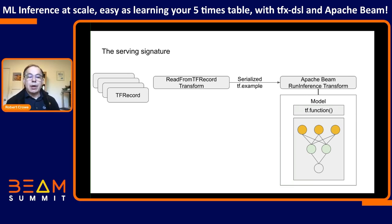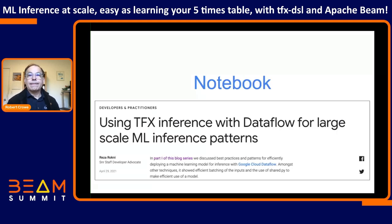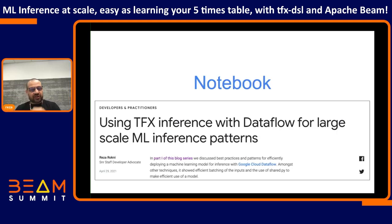A serving signature is very much like a method signature — it tells you what the model expects and how you can query the model. You can actually have multiple signatures to query the model in different ways. When you just train a model without specifying a particular signature, there's a default, but for more advanced usages you can specify your own custom signatures, which gives you more flexibility.